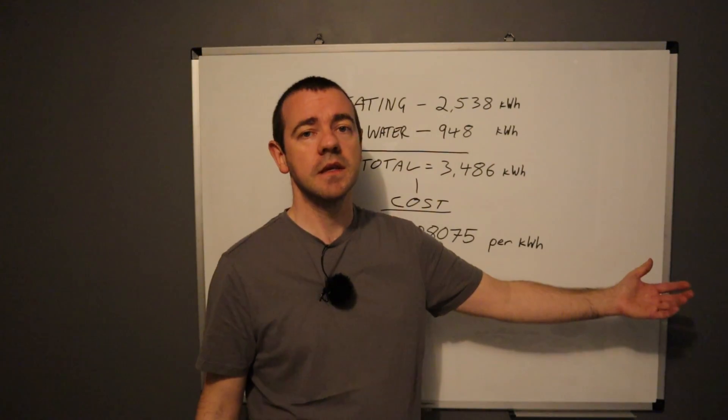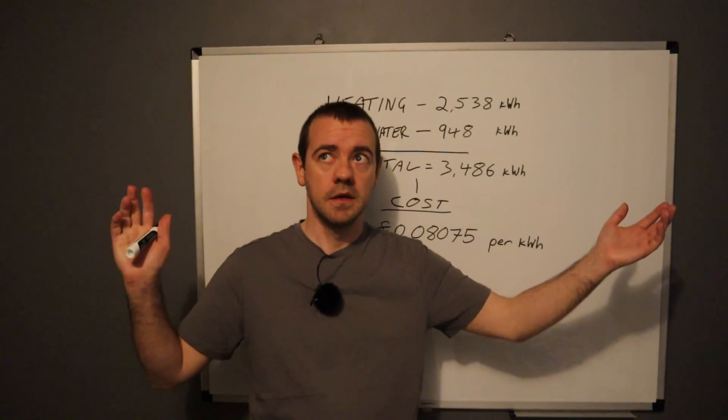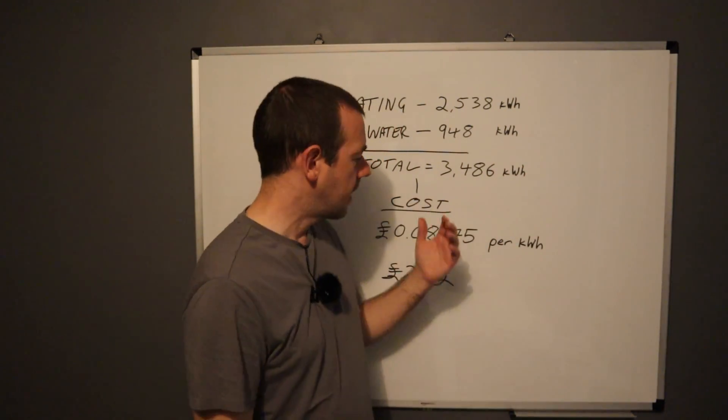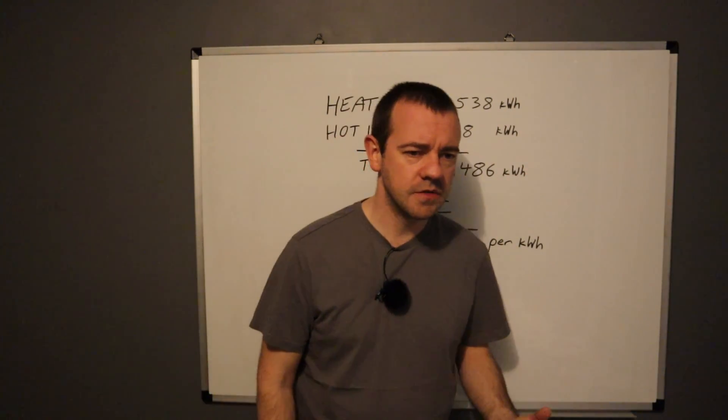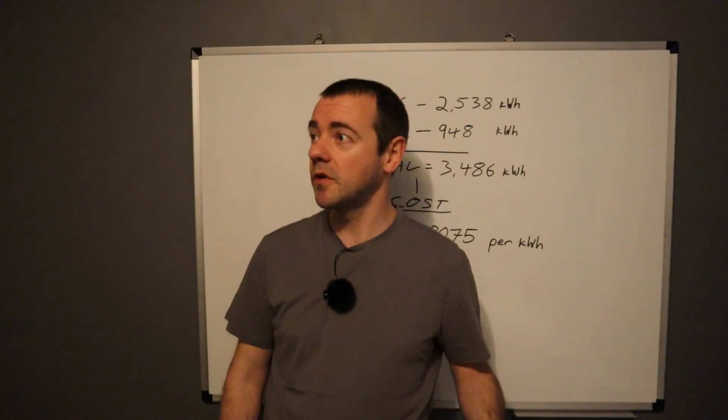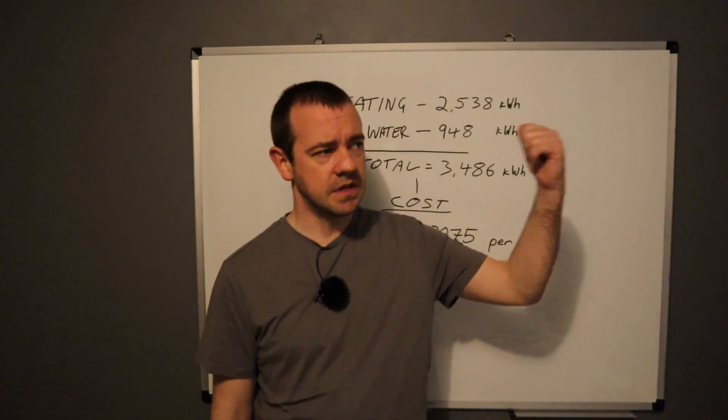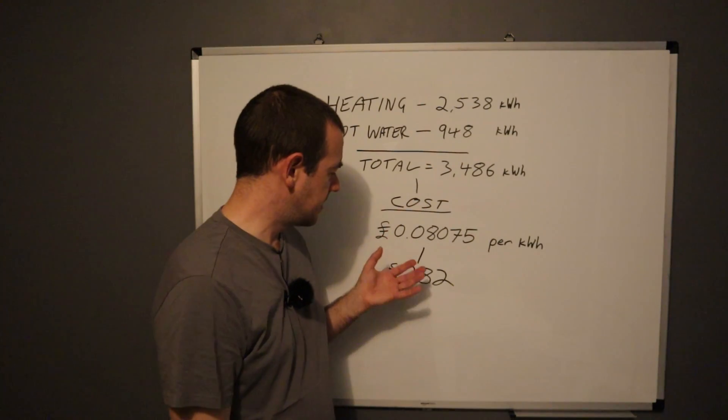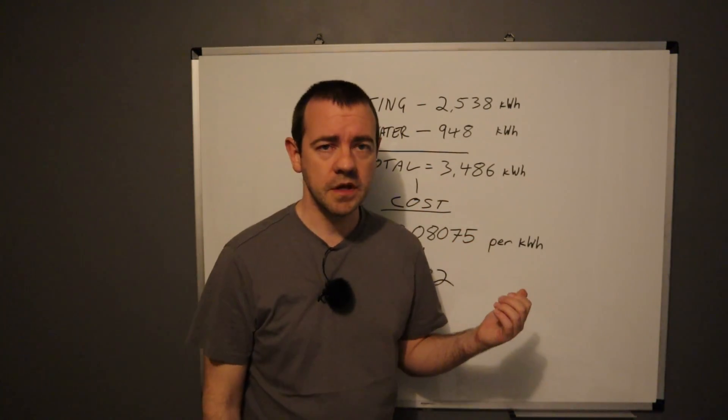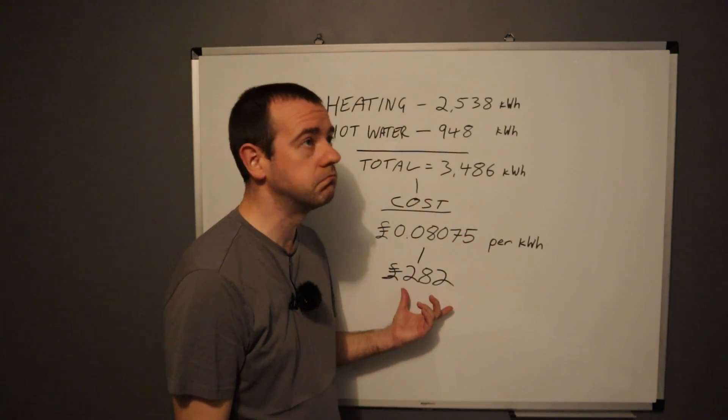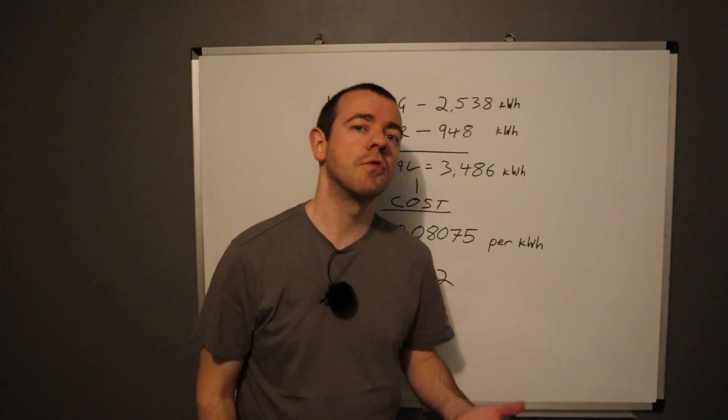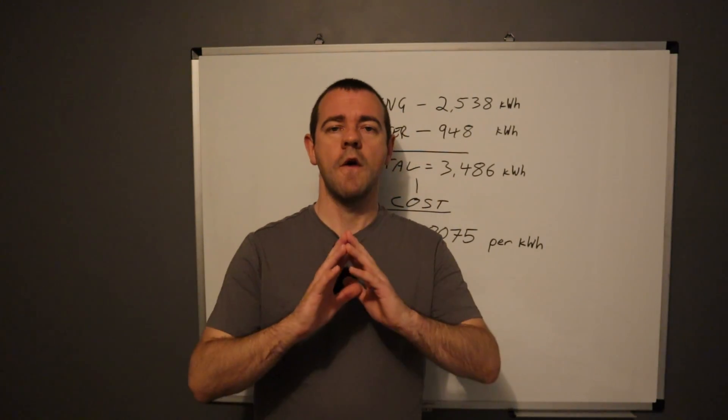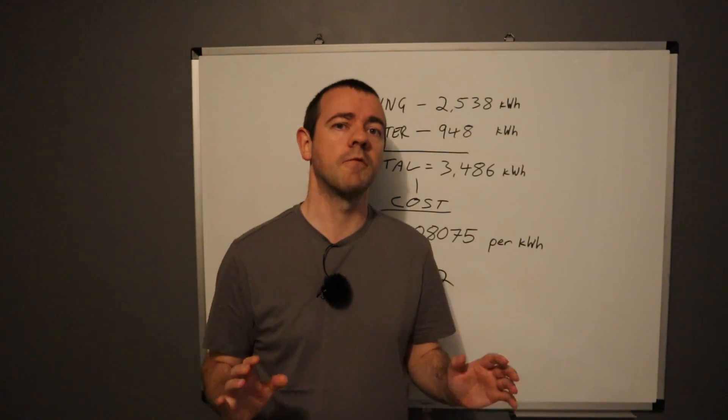So for the next however many years we spend in this house - this is the forever house, if you will - we've got the panels, we've got the battery system, we've got the heat pump and we now have a house which is probably the cheapest to run it can possibly be without going to ridiculous levels like triple glazing or something like that. I reckon, estimating it, and this is really for another video, we're probably looking at about £600 to £700 a year for our total utility bill for this house. £600 to £700 for everything for a full 12 months.